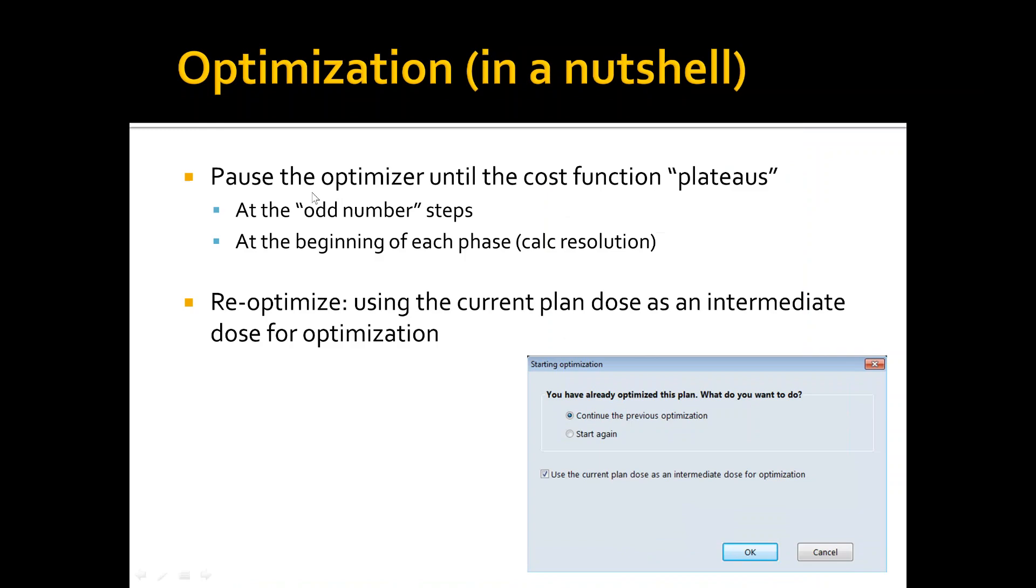So in a nutshell, I paused the optimizer until the cost function plateaued at the odd number steps. I also actually paused it a little bit also for the even numbers as well, and especially at the beginning of each phase or calculation resolution. I also re-optimized after the final dose calculation, and I used the current plan dose as intermediate dose for optimization. This is a feature that's there in Eclipse. I used that feature, and I noticed some improvement, a minor improvement, but it helps you in terms of your score, especially for the right-sided organs at risk.